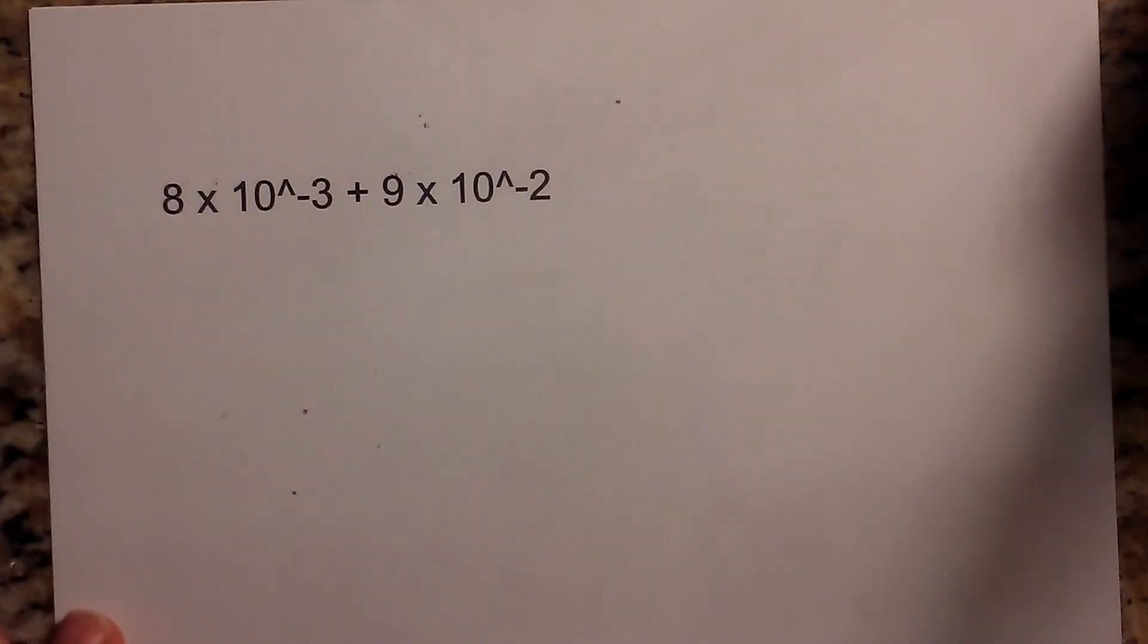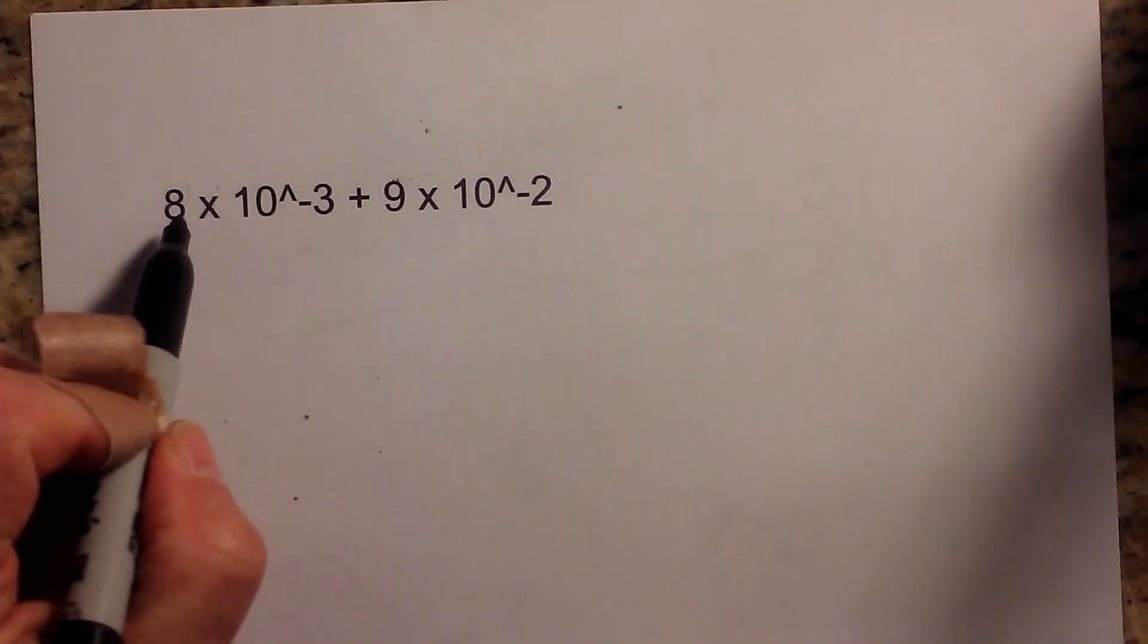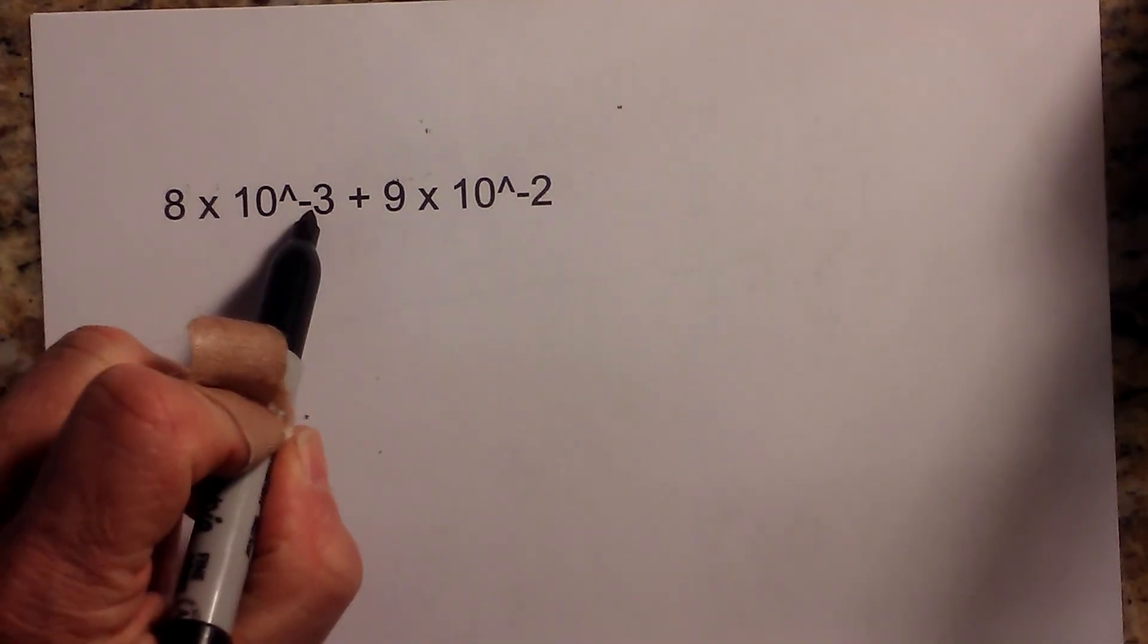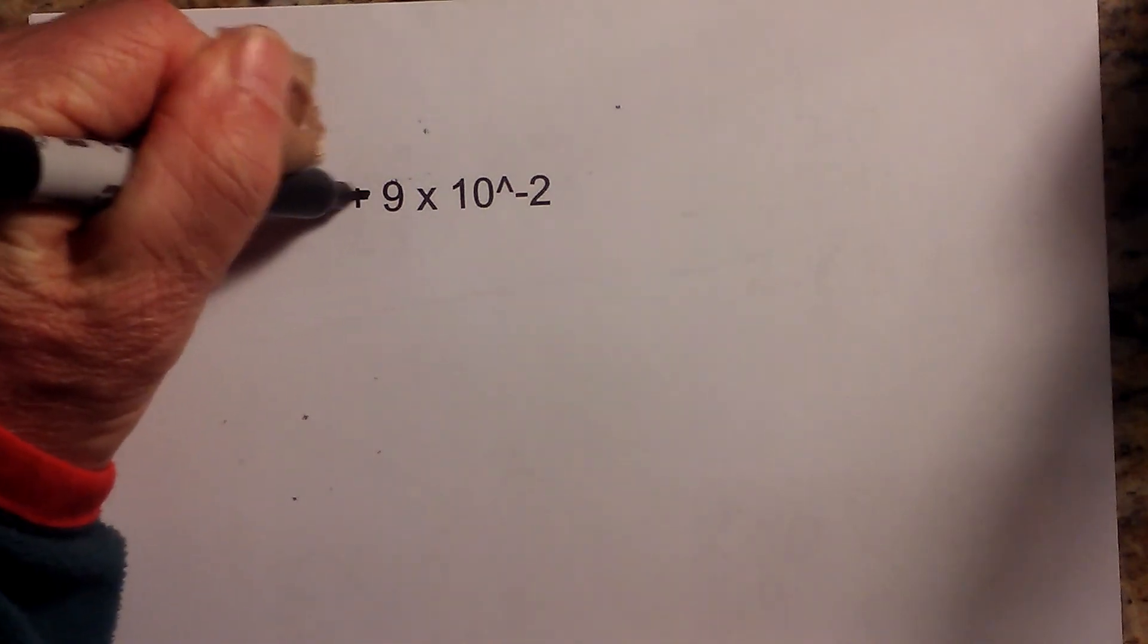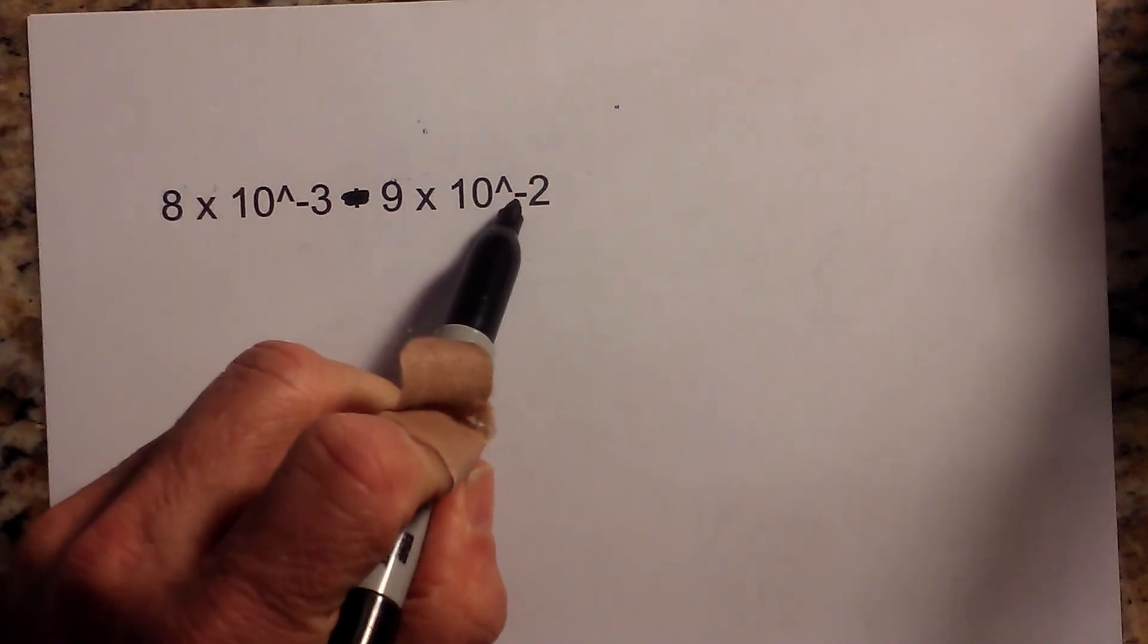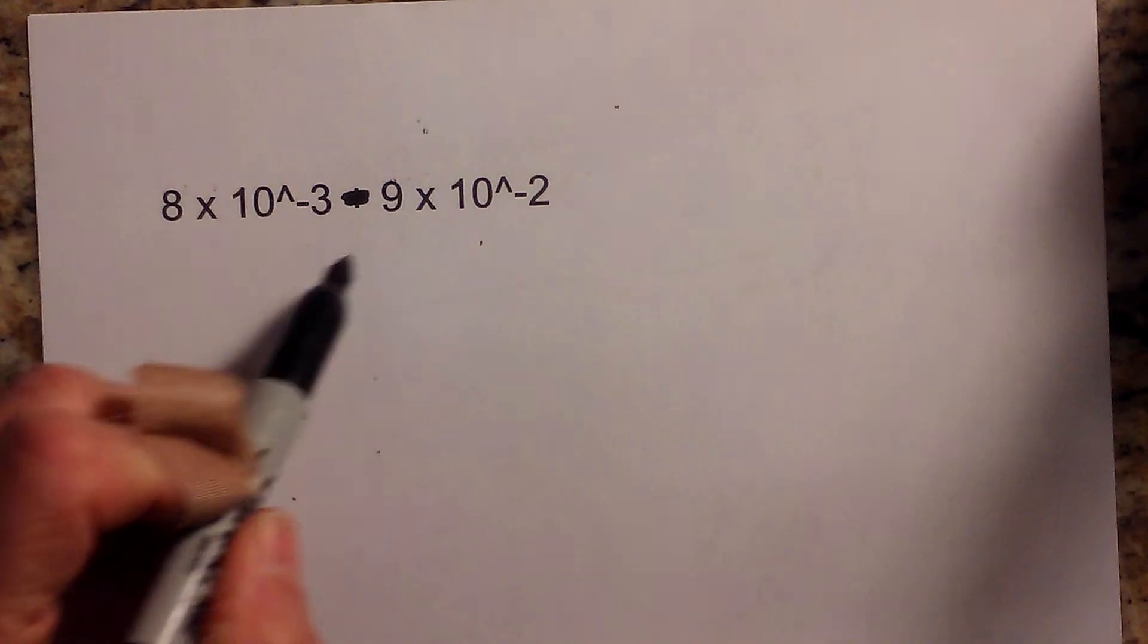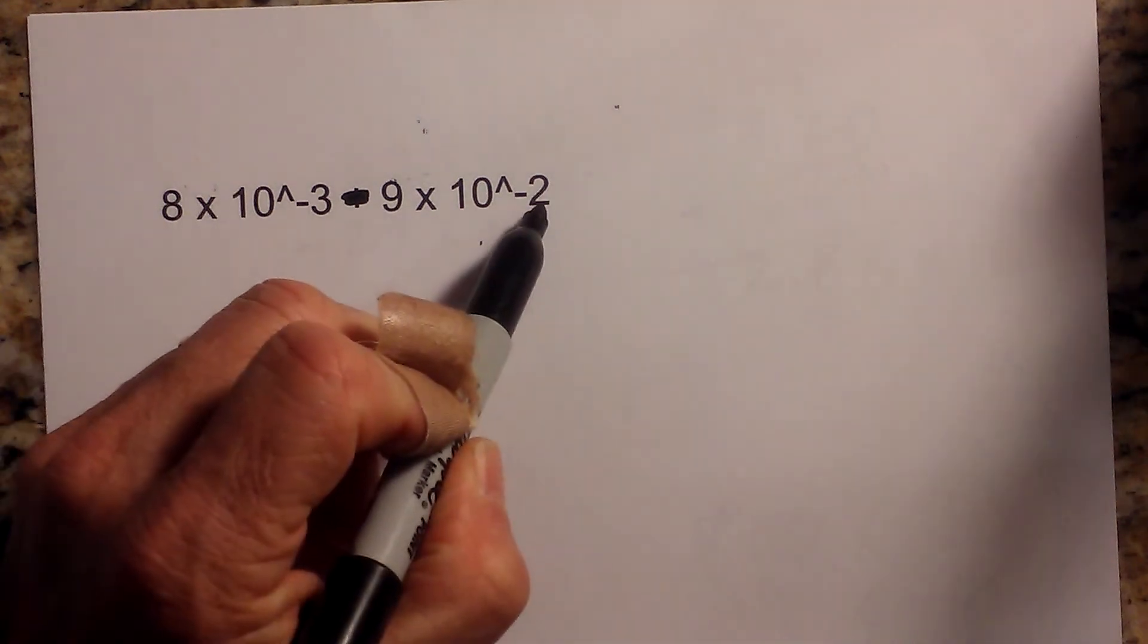Now this one can seem a little tricky because you have 8 times 10 to the negative 3rd, excuse me, this should be minus 9 times 10 to the negative 2nd. At first glance you would think that the negative 2 is smaller than negative 3.